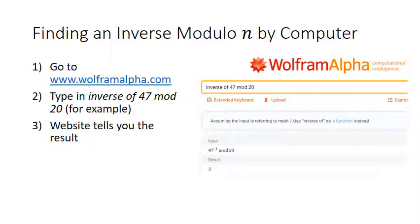There is a way to do this by hand, but it's fairly complicated, and since this class covers so many topics I want to first teach you how to do it by computer. The website you want to use is wolframalpha.com — just go to the search box and type something like 'inverse of 47 mod 20' and it will give you the result.